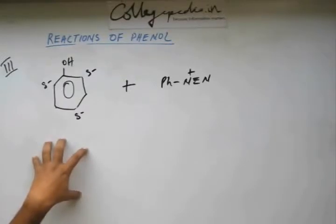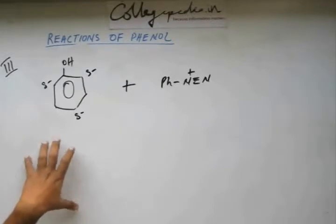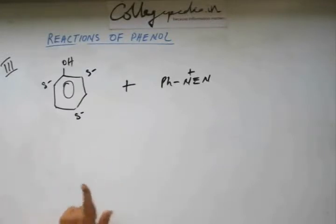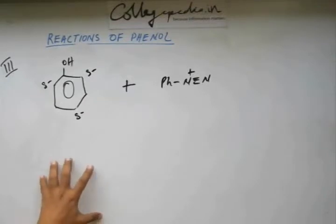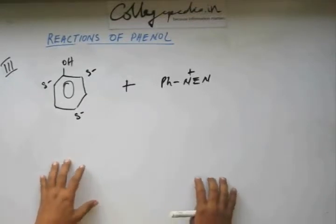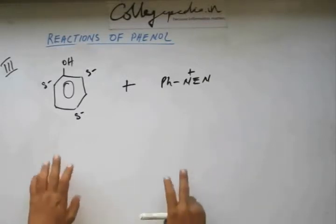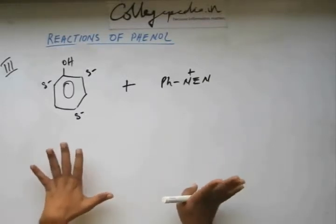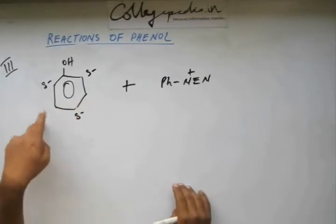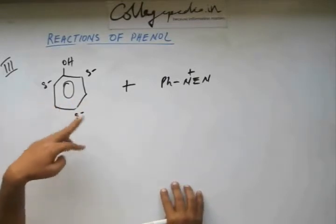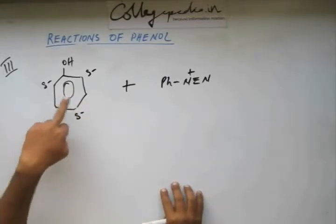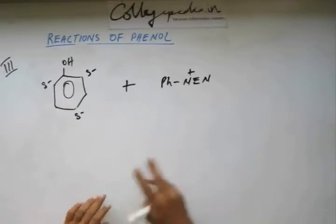So you can search for a video formation of azo compound. You'll get a link to a video and you can listen to the whole thing in great detail there. But here we will see in very short form and just see one reaction corresponding to understanding the significance and consequence of the charge polarities at ortho and para position.